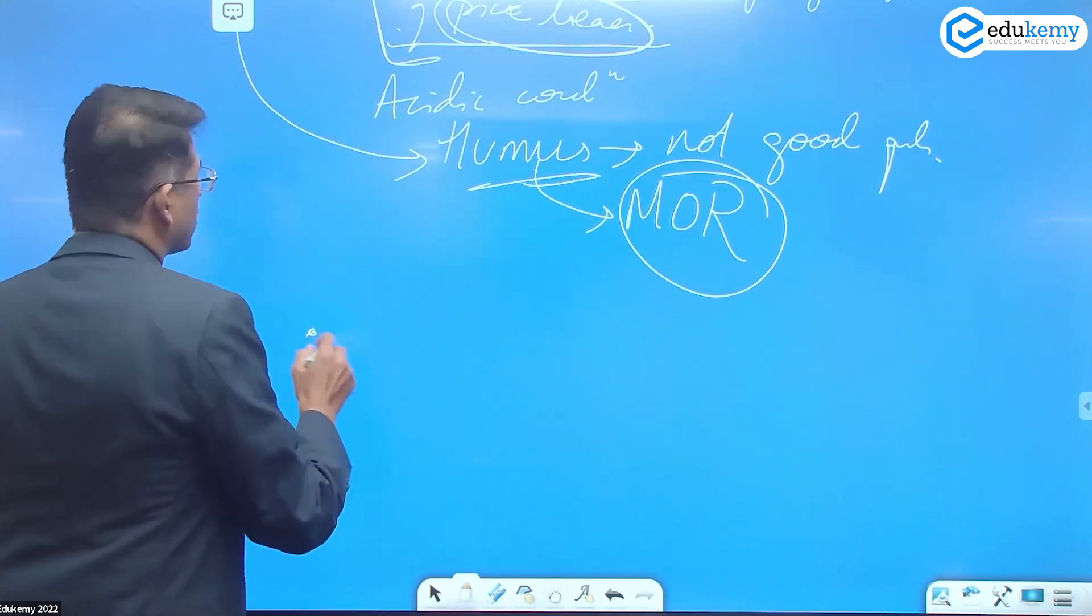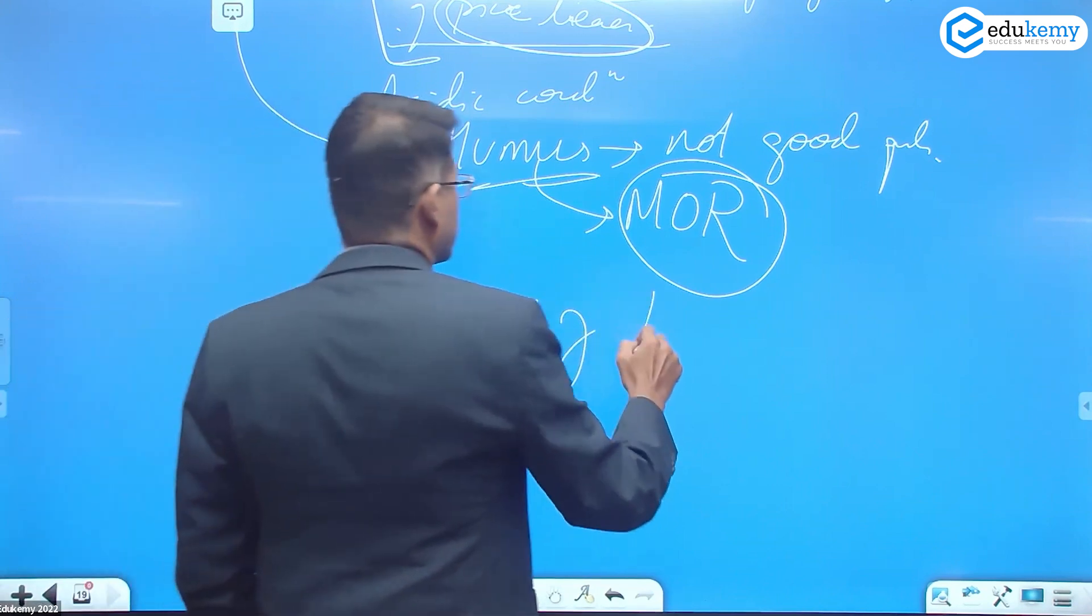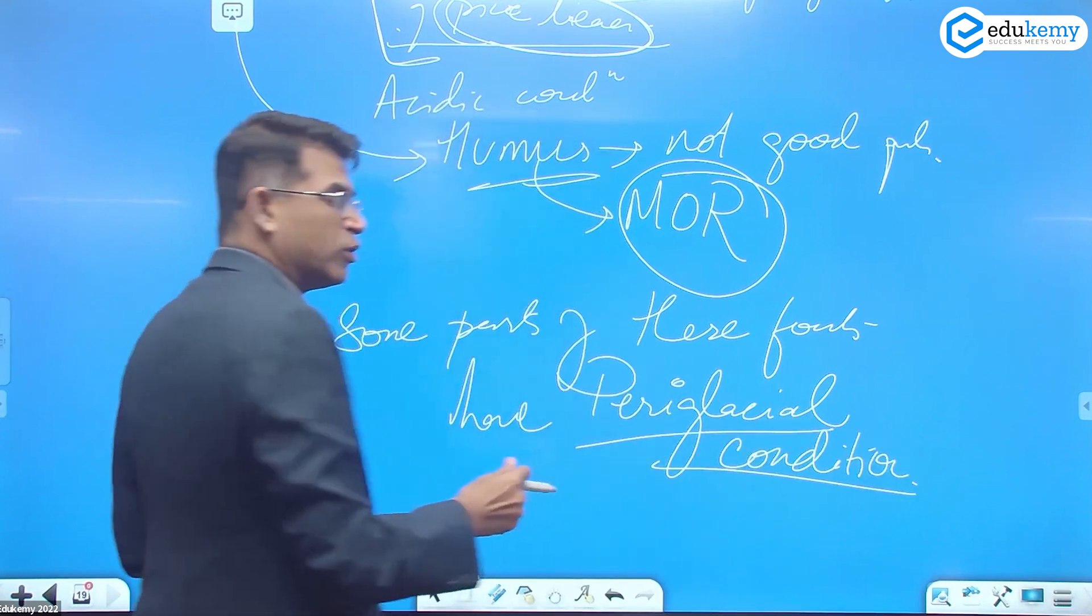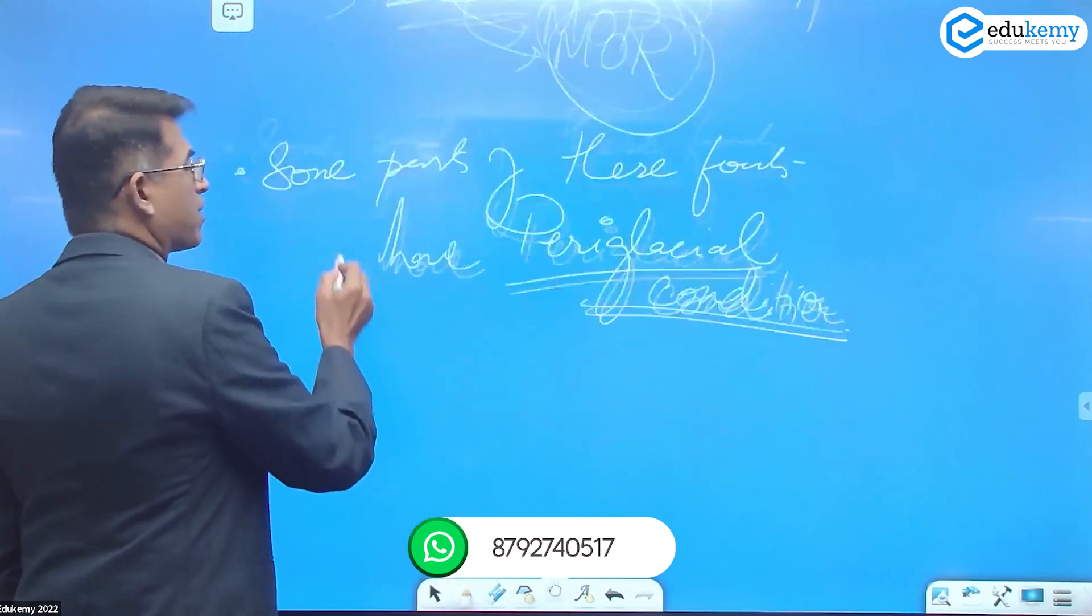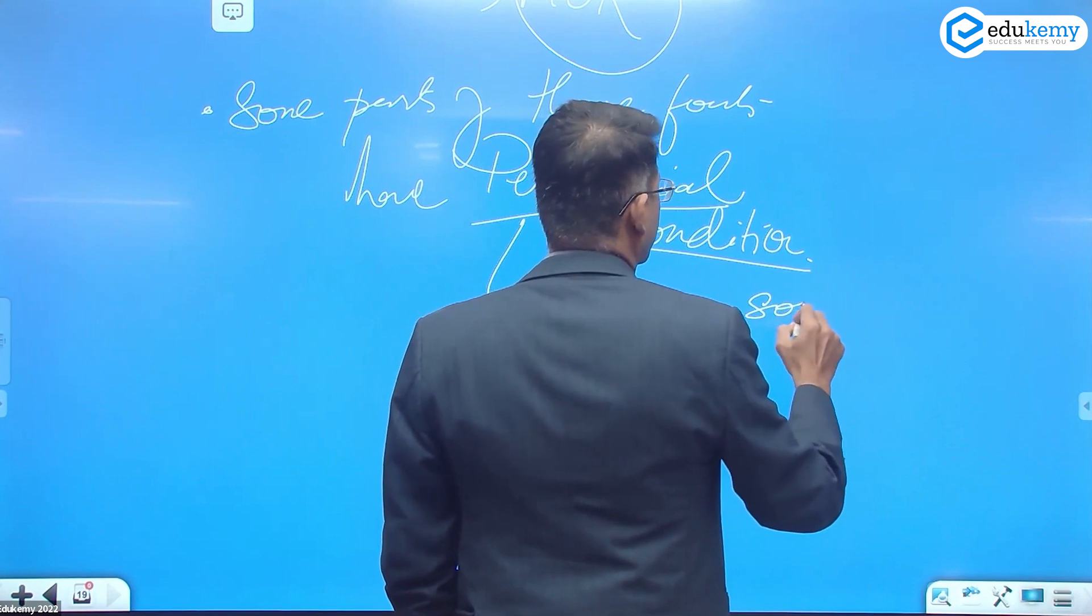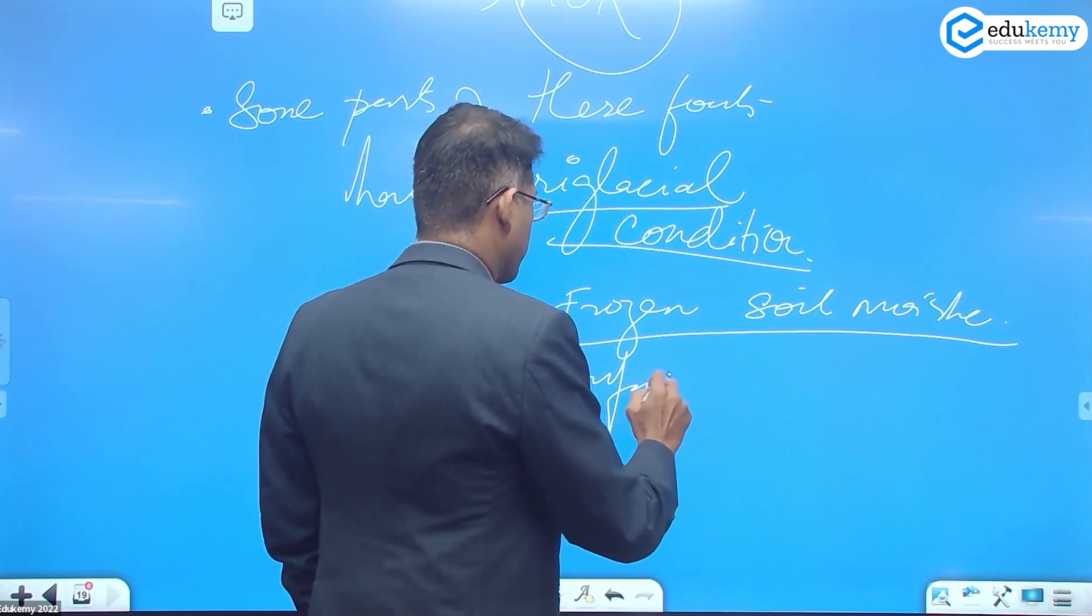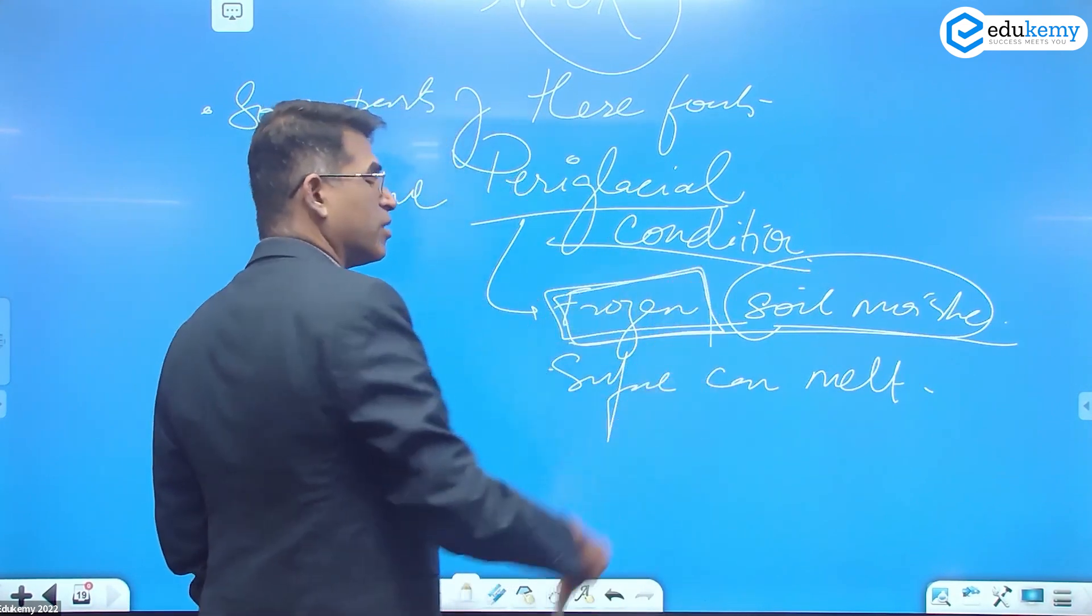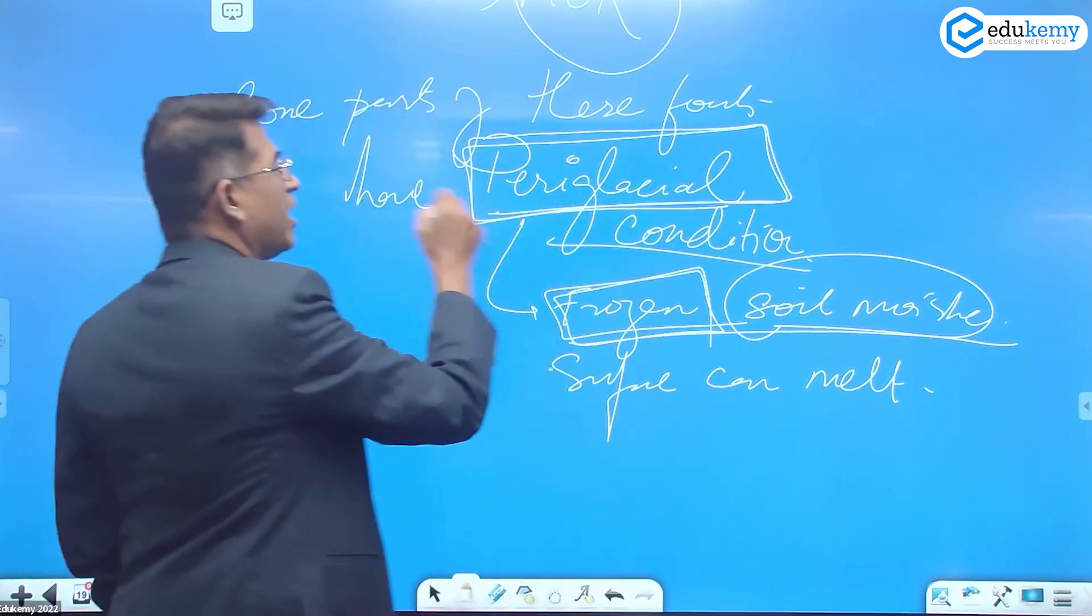If you look at the ground, some parts of these forests have periglacial conditions. The soil moisture is frozen. They have periglacial, which means they have frozen soil moisture. Another reason is, you can't have cultivation. Although the surface can melt, the soil moisture remains frozen. These conditions are called periglacial.